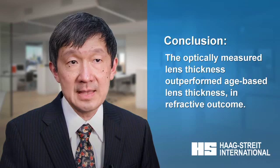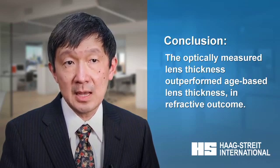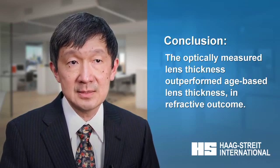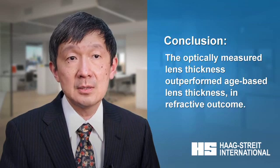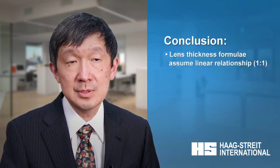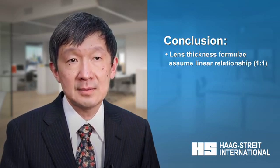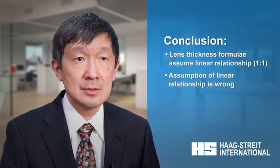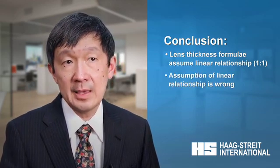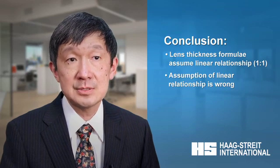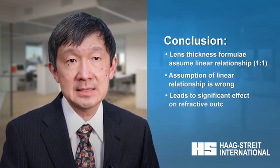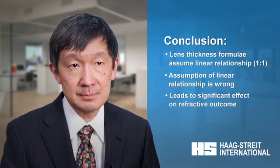The conclusion of the study is that optically measured lens thickness outperformed age-based lens thickness in refractive outcome. The reason is that formulas that estimate lens thickness from age assume a perfect linear relationship between age and lens thickness, with a correlation coefficient of 1. This is a false assumption. The true correlation coefficient between age and lens thickness is actually 0.45, significantly impacting the refractive outcome.